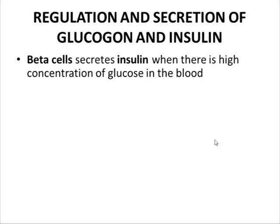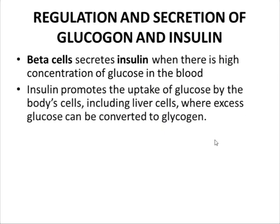The beta cells are responsible for the secretion of insulin into the blood when there is a high concentration of glucose in the blood. When blood glucose is high, beta cells secrete insulin. Insulin lowers the glucose concentration by promoting the uptake of glucose into body cells, and in liver cells it converts excess glucose into glycogen.